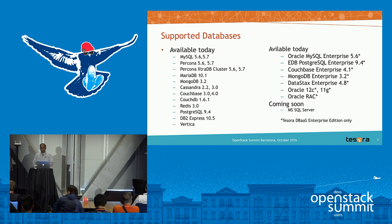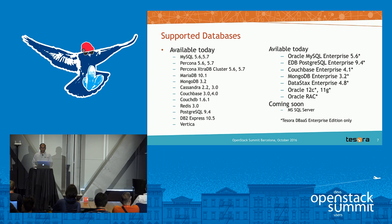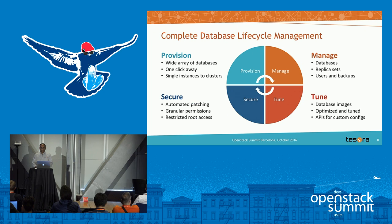These are all the databases available right now. On the left-hand side are the community databases — MySQL and its flavors, Percona, MariaDB, Mongo, Cassandra, CouchDB, Redis. On the right-hand side are commercial databases. Given they have licenses behind them, they are not available as part of the community OpenStack distribution.